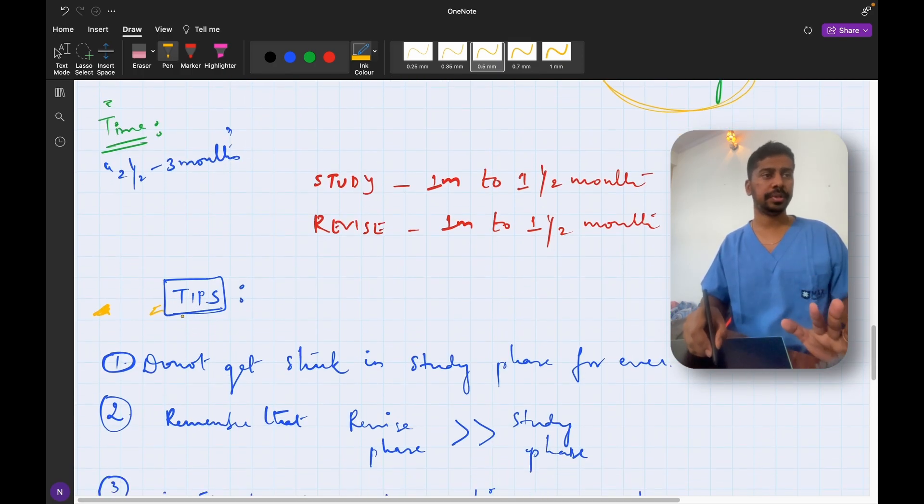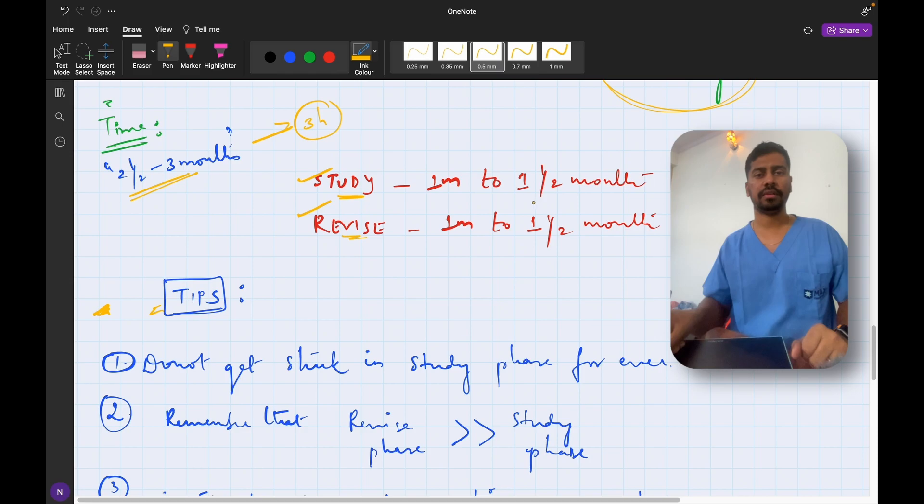Now let's come to the time that is required to pass the exam. So ideally you would require about 2 to 3 months. Some people might require little more time and some people might be doing it in one and a half months as well. So the average is going to be two and a half to three months provided you are reading for at least three hours a day. And this three months you would like to divide equally between study and revision giving them one to one and a half months each.